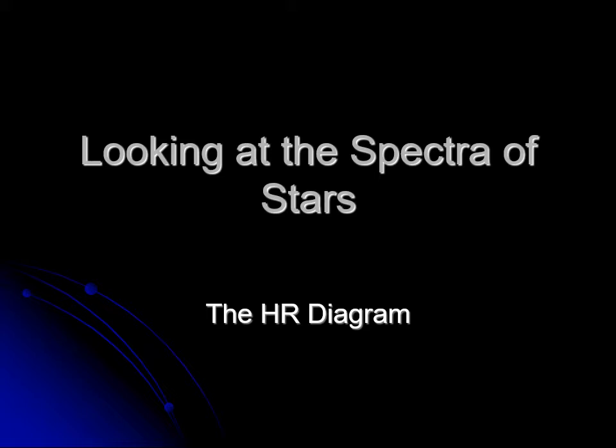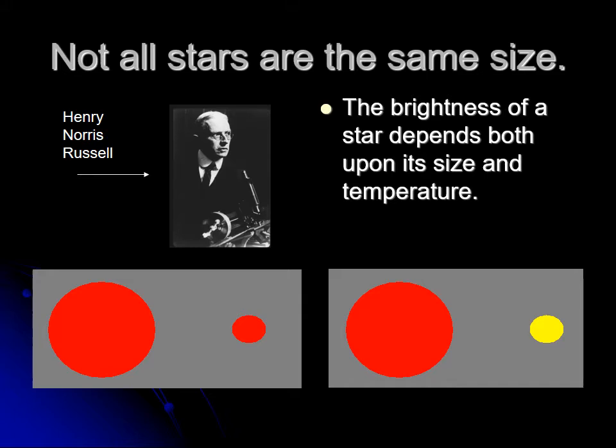There's an interesting relationship here with magnitudes also. Small stars and big stars can have different brightnesses. If you have two stars that are the same temperature, the small star is going to be dimmer than the big star. If two stars are the same size but different temperatures, the hotter star is brighter. If they're different temperatures, it's possible the smaller star is the same brightness or even brighter than the big star.